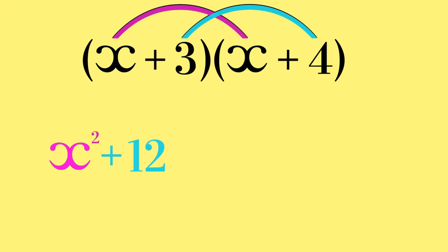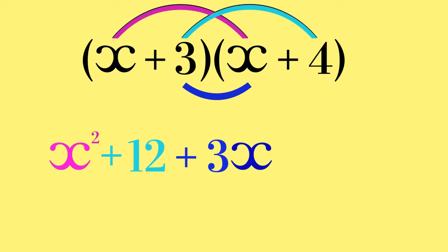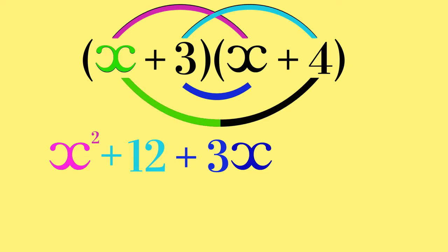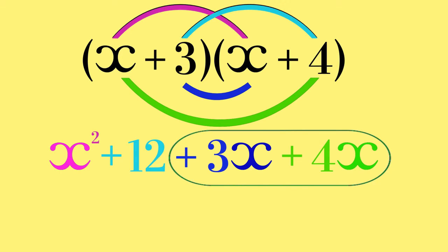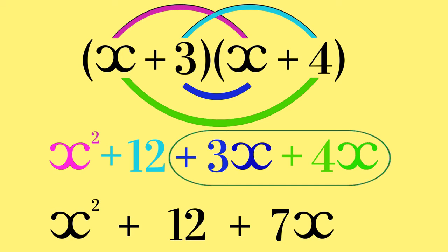The nose is made from multiplying the second term in the first bracket by the first term in the second bracket. 3 multiplied by x is 3x. And lastly, the chin is made from the first term in the first bracket and the second term in the second bracket. x multiplied by 4 is 4x. Now we have expanded the brackets to make an expression. We can add the like terms of 3x and 4x together to make 7x.